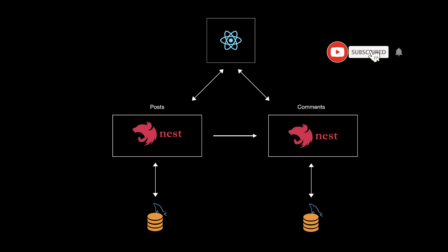In this video, we will continue the series for the NestJS microservices by switching the HTTP request from the post microservice to the comments to the opposite direction. I will also add a new feature where this HTTP request will have a 10% chance of failure. So in both microservices, we will have missing information, and we will fix this problem in the next tutorial by adding cron jobs to synchronize the database.